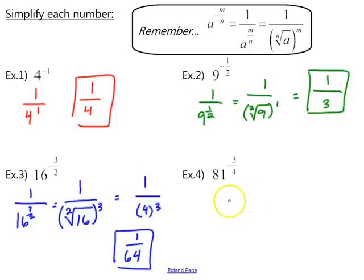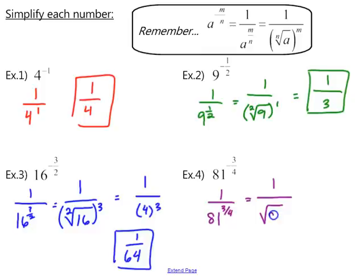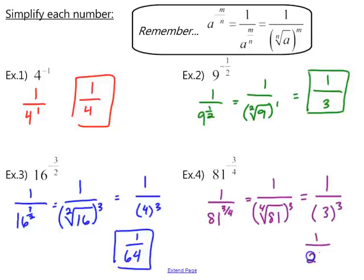Try the last example on your own. You should first write 1 over 81 to the positive 3 fourths, then convert to radical notation: 81 under the radical with an index of 4, all raised to the power of 3. The fourth root of 81 is 3, and 3 cubed gives us a final simplified answer of 1 over 27.